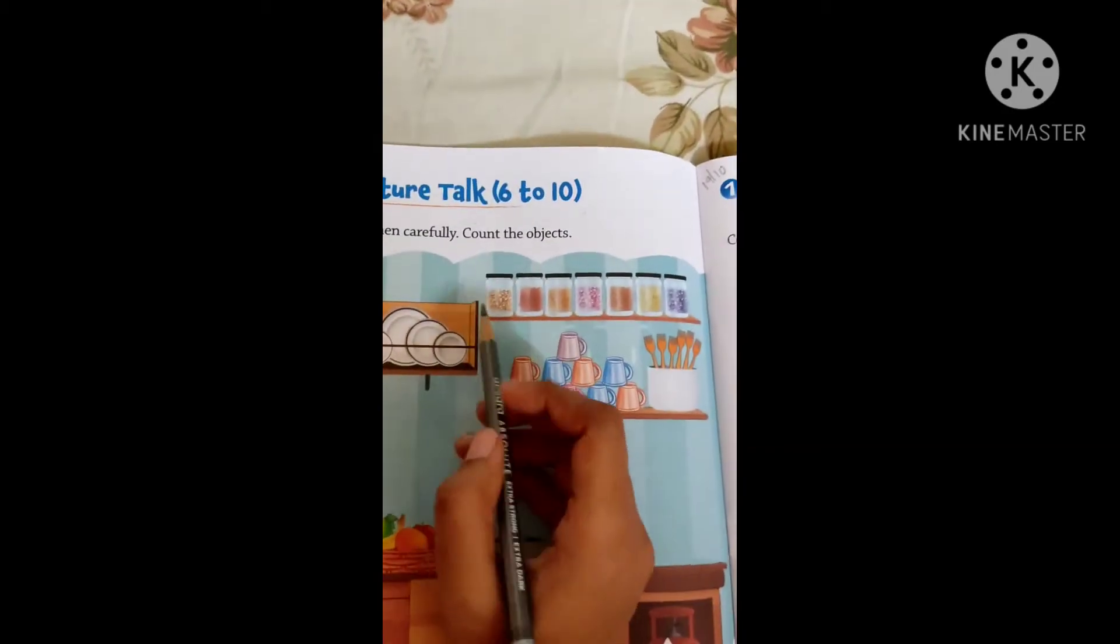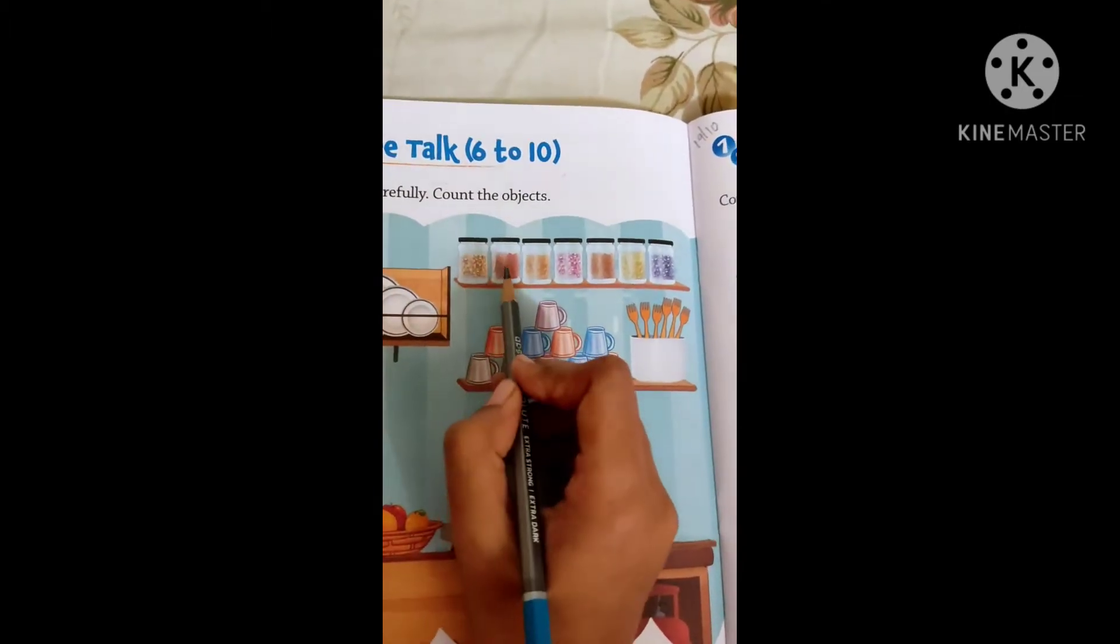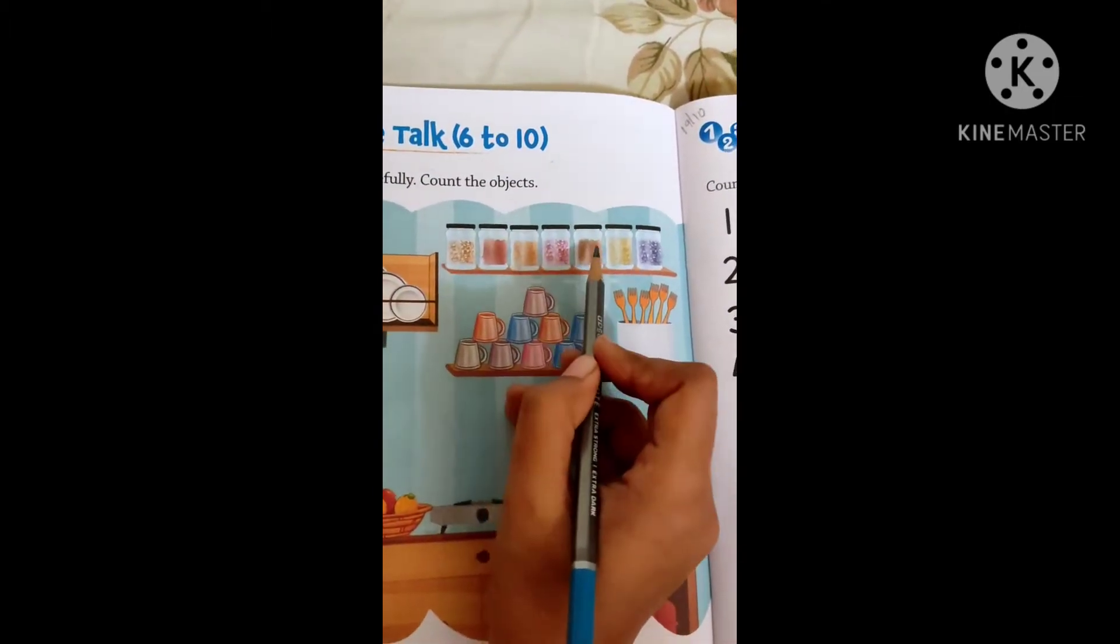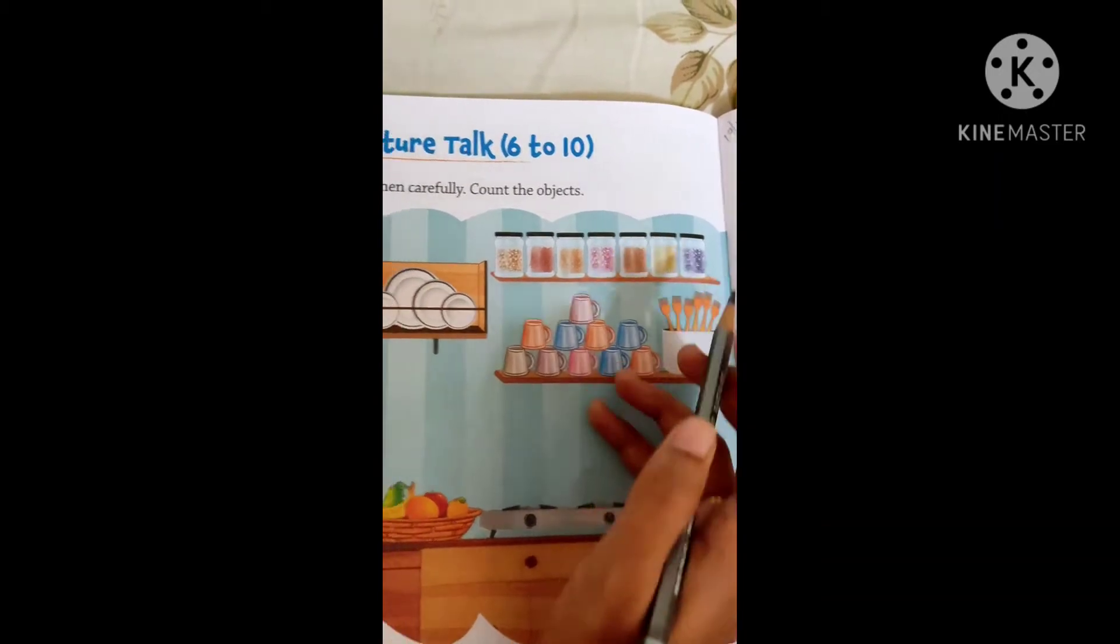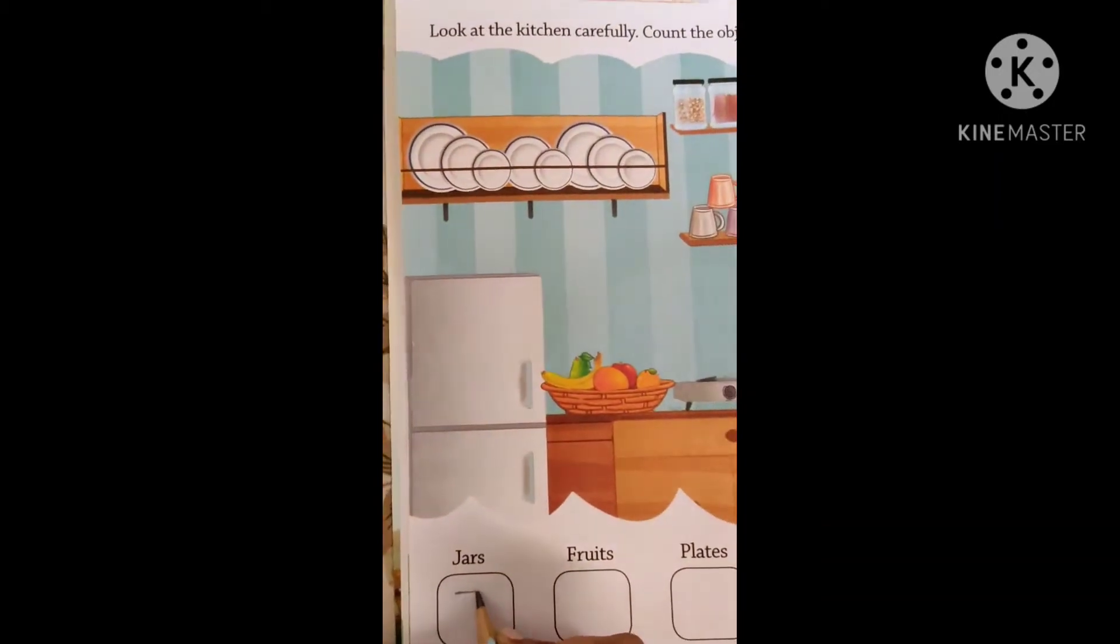First is jars. So here is the jar. Let's count. 1, 2, 3, 4, 5, 6, 7. So write here 7.